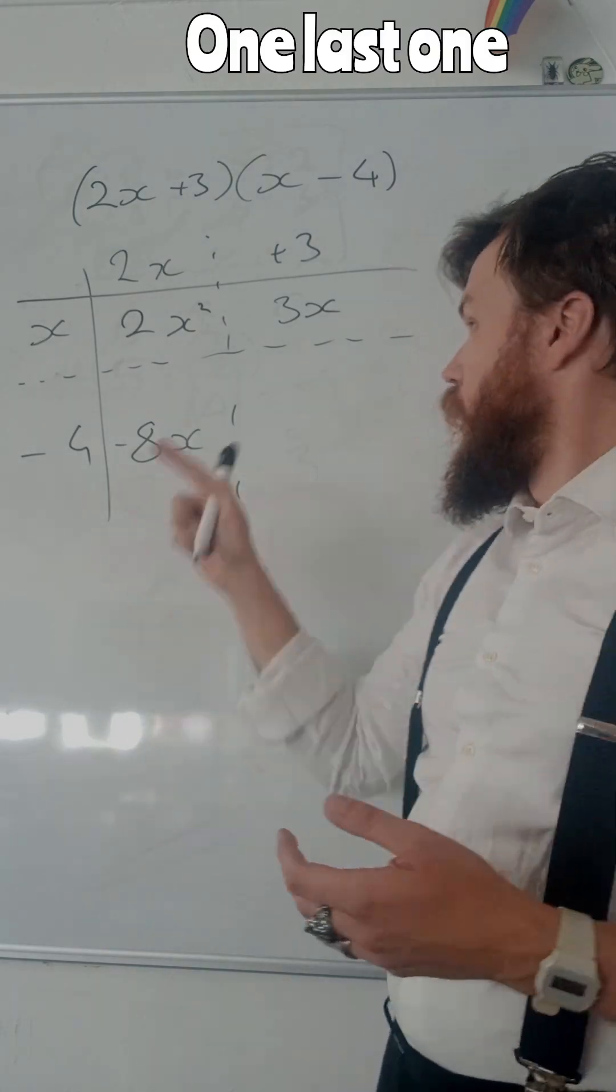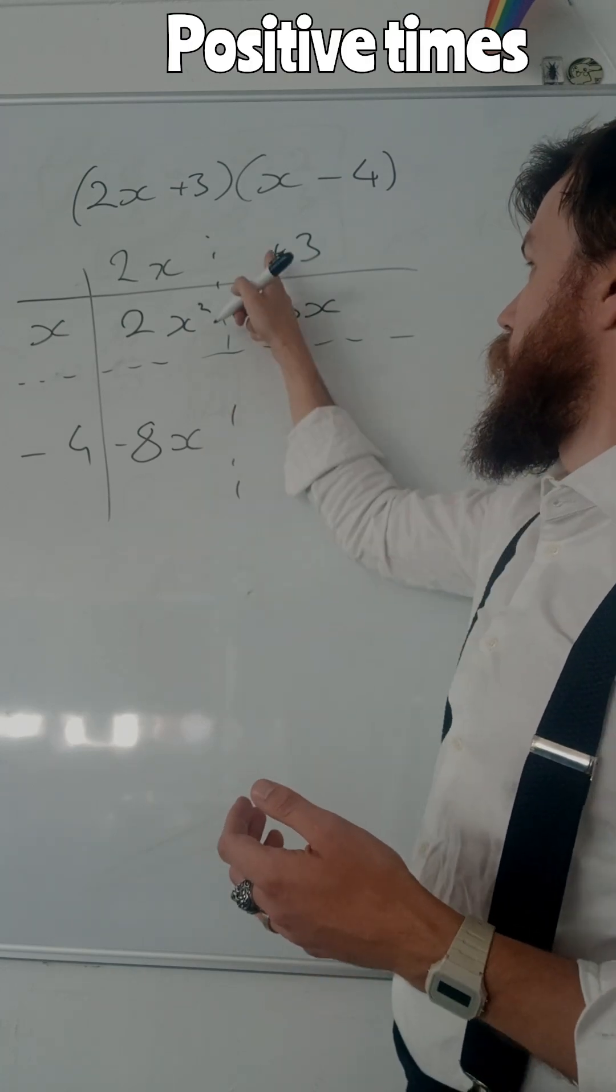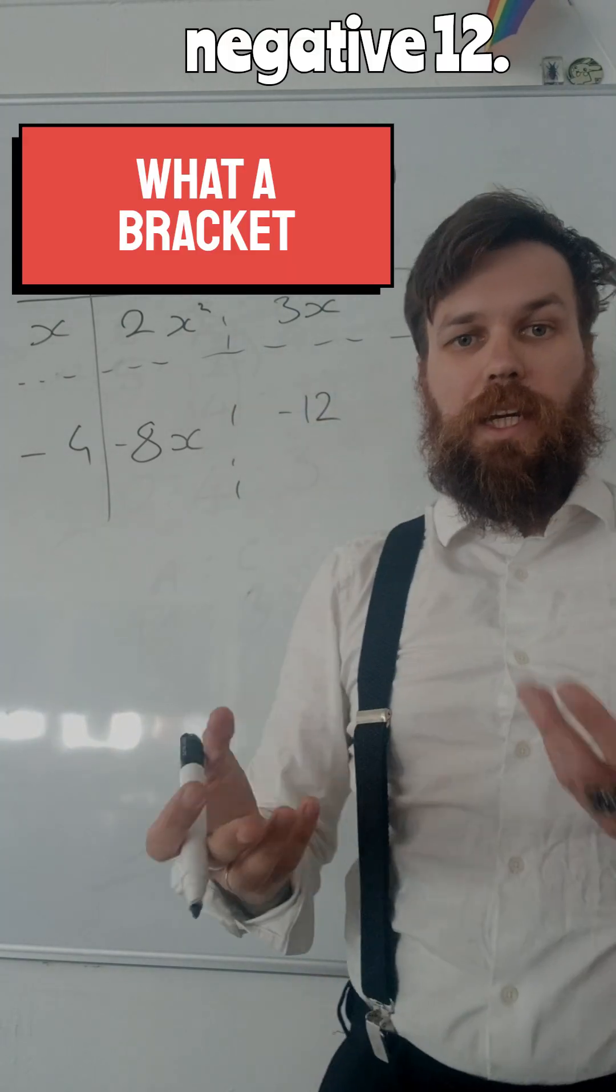Great. One last one to go. 3 multiplied by 4, 3 times 4 is 12. Positive times a negative gives me a negative, negative 12.